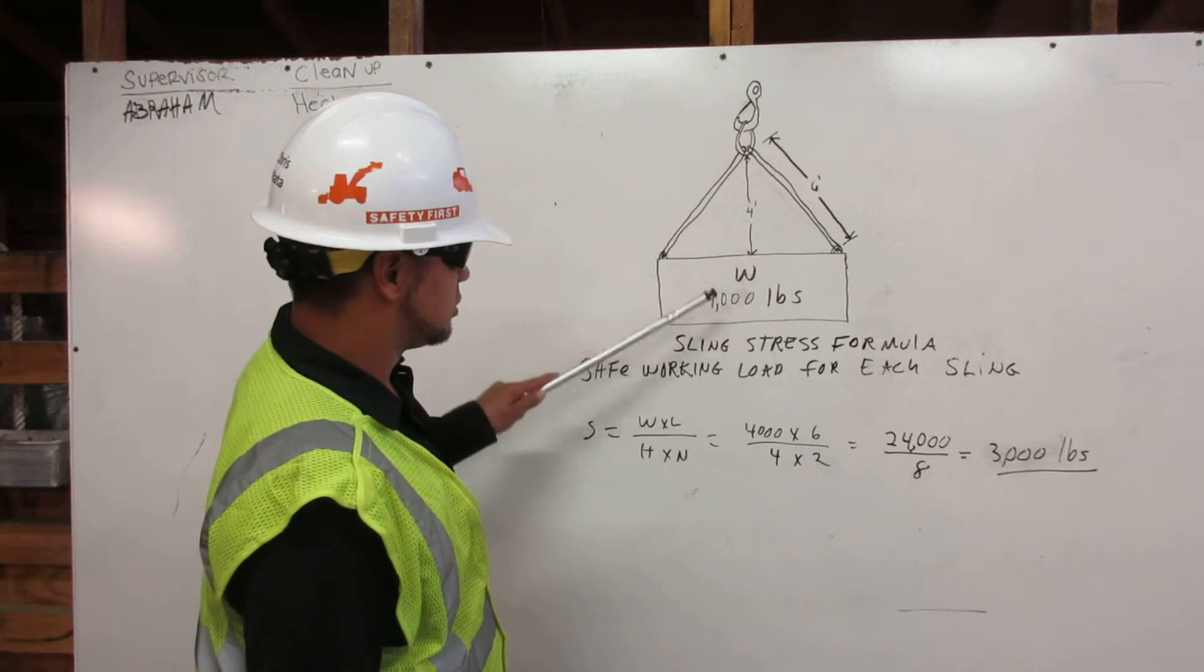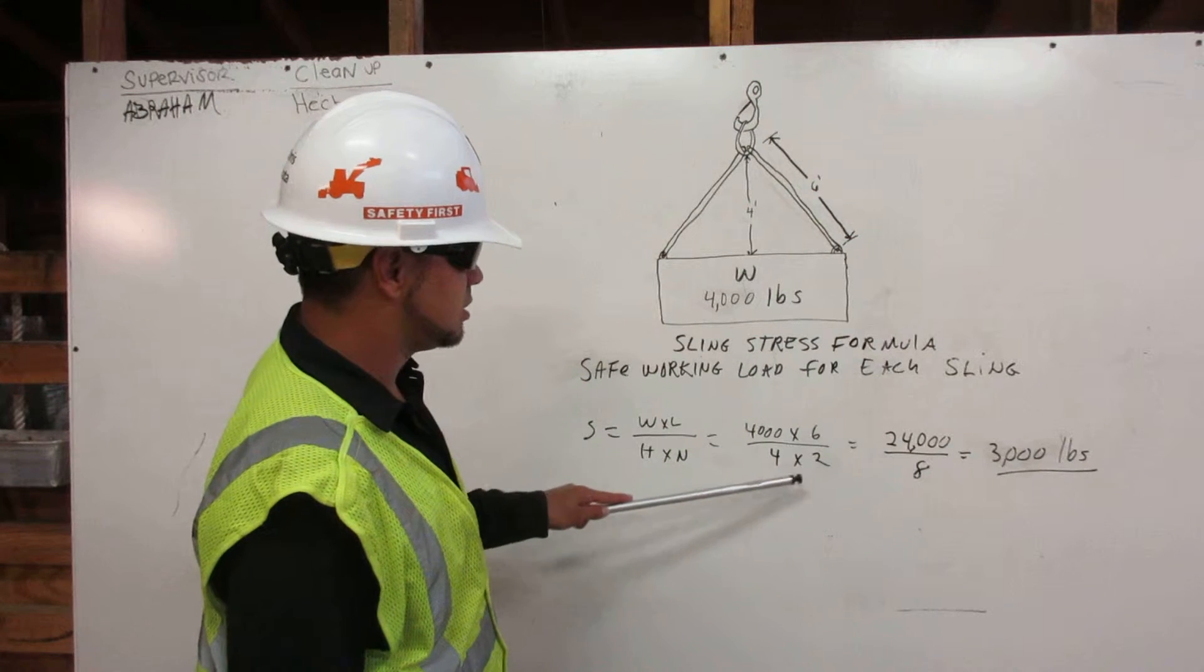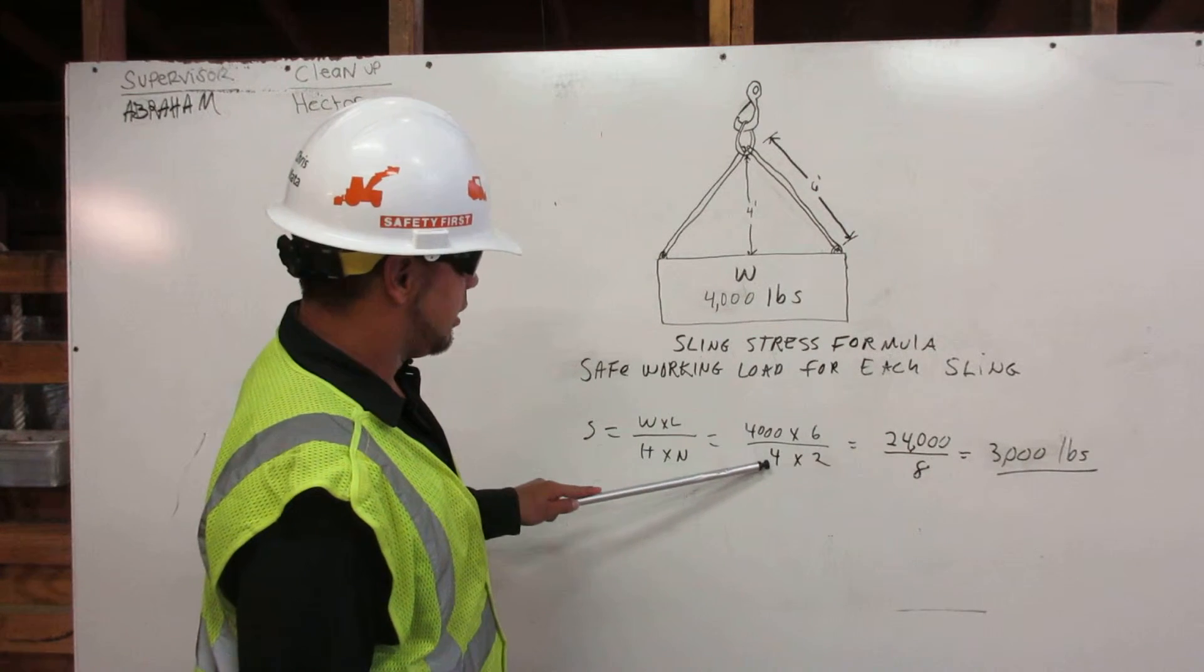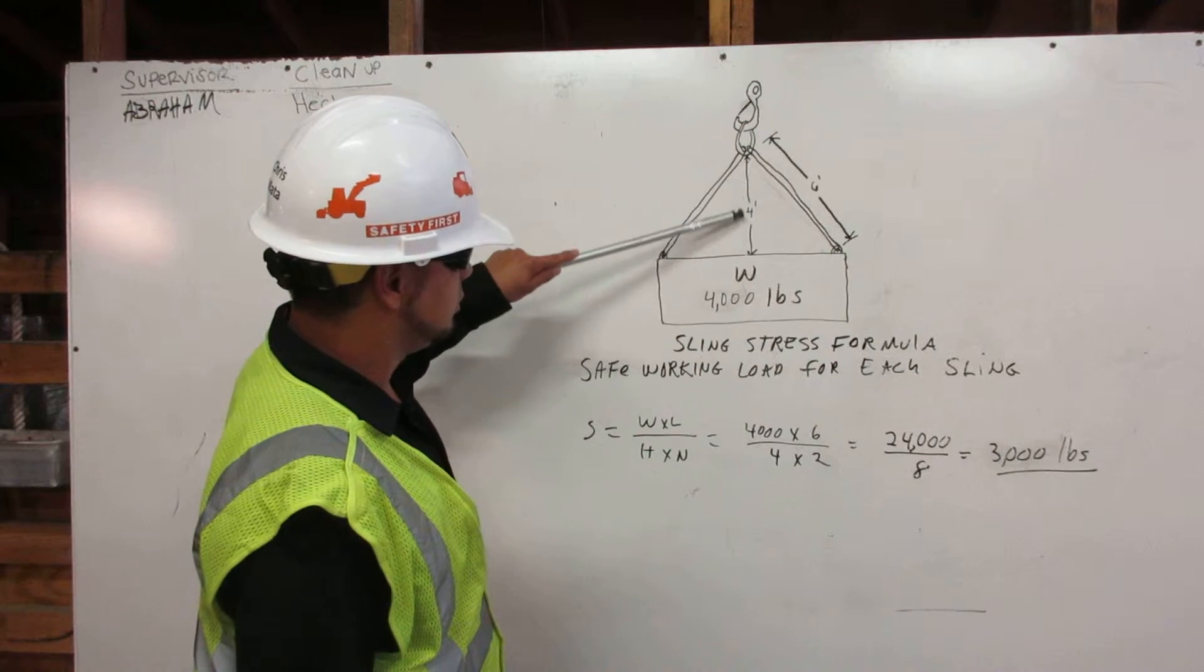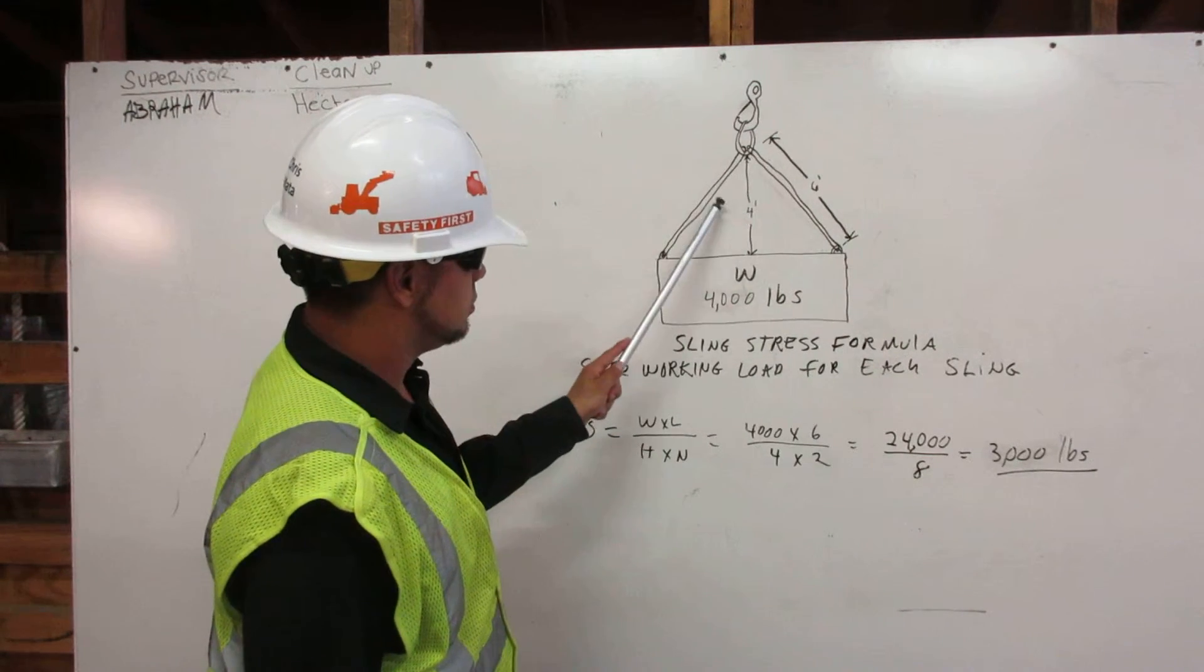My weight is 4,000 pounds, the length is 6 feet, so 4,000 times 6. The height is 4 feet from the object to the shackle. I have 2 slings.